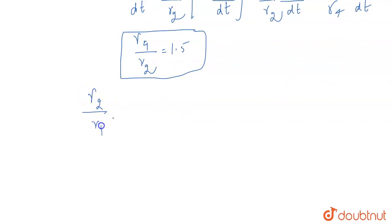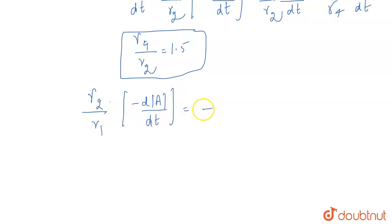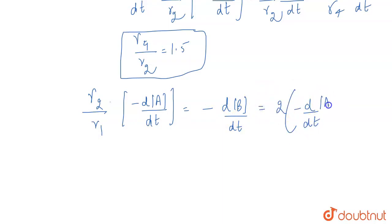Now, γ2 by γ1 into minus dA/dt equals minus dB/dt. And this will be equal to 2 times minus dB/dt of concentration of A. So from here, γ2 by γ1 comes out to be 2.